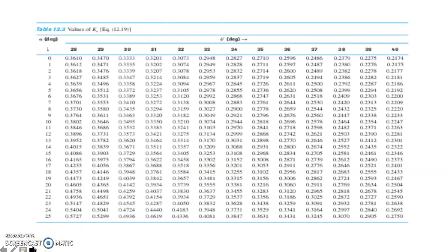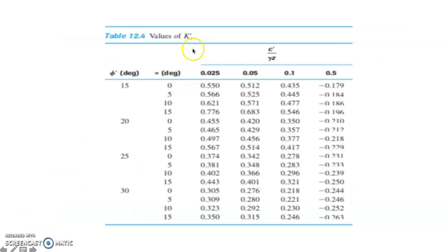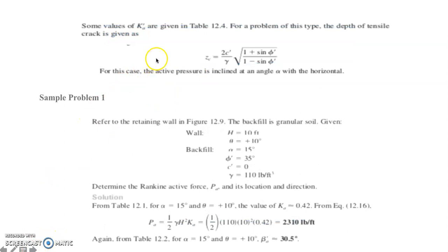Different values of Ka can be obtained from a table using the given values of alpha and phi prime. A second tabulation provides Ka using phi prime, alpha, and the ratio of cohesion to (unit weight × depth), i.e., c'/(gamma × z). The equation for the tensile crack can also be computed for this case, and the active pressure is inclined at angle alpha with the horizontal.